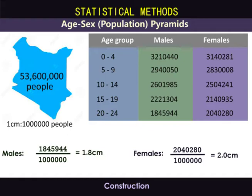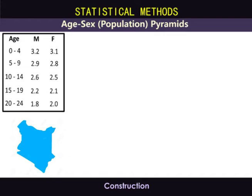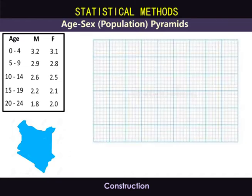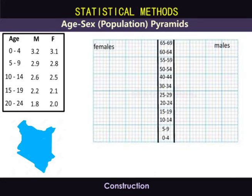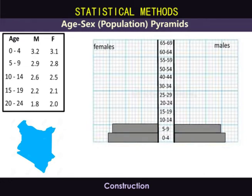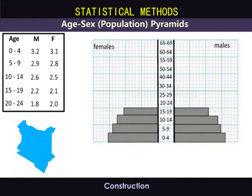Now we can replace the table with another one showing the length of the bars for each age group. We get graph paper and start by drawing two lines, then fill in the age groups. Drawing the bars: 0 to 4 years — males 3.2, females 3.1; 5 to 9 years — males 2.9, females 2.8; 10 to 14 years — males 2.6, females 2.5; 15 to 19 years — males 2.2, females 2.1; 20 to 24 years — males 1.8, females 2.0. We proceed in the same manner for all other age groups up to 100 years and above.